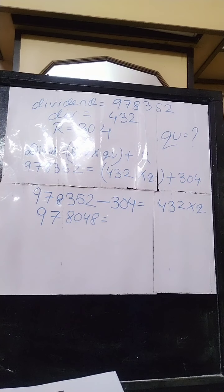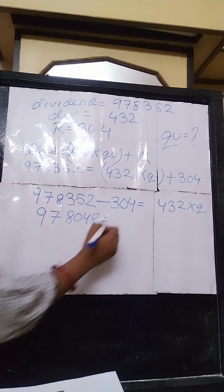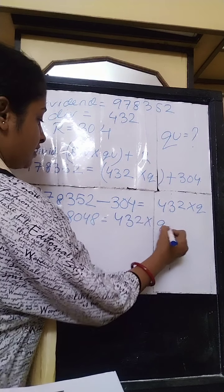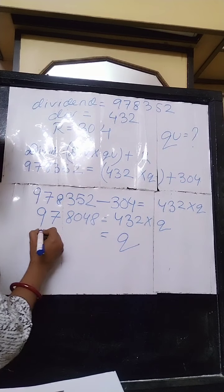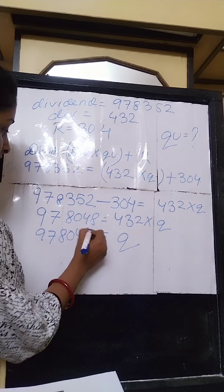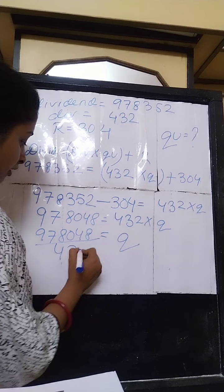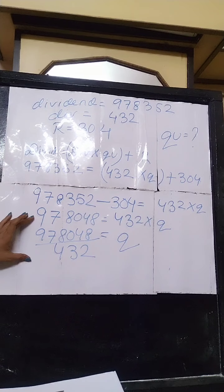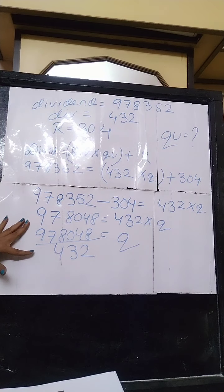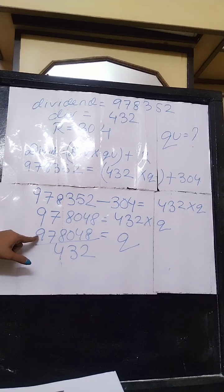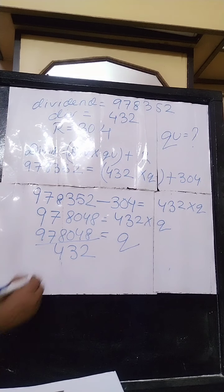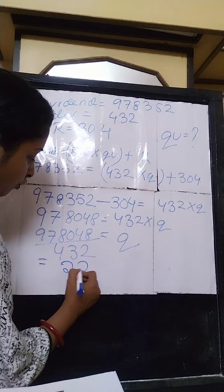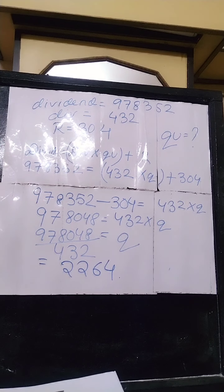After doing the subtraction you get 978048. So 432 into quotient equals 978048. Now to find out the quotient, you divide 978048 by 432. By dividing 432 into 978048, you are going to get 2264 as the quotient.